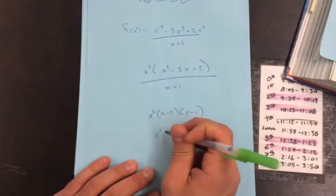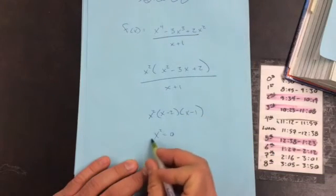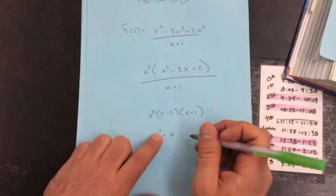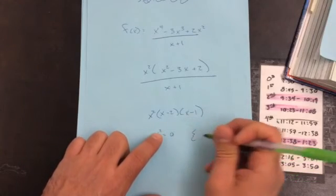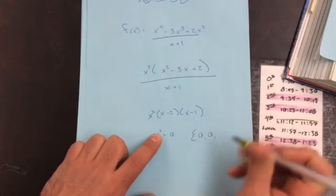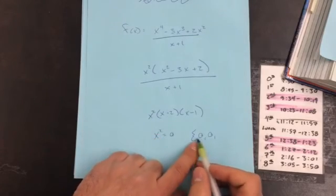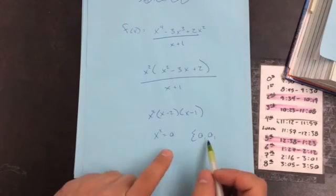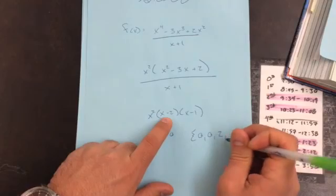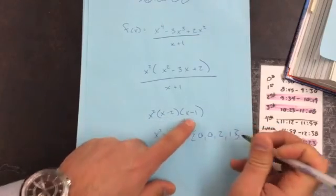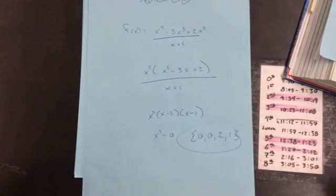I set each of these equal to zero. Since this gives me zero and has a power of 2, it's actually telling me that I have multiplicity there. There's two zeros at the value of zero. This is going to give me two and this is going to give me one. And that's the answer. That's it when you're looking for zeros.